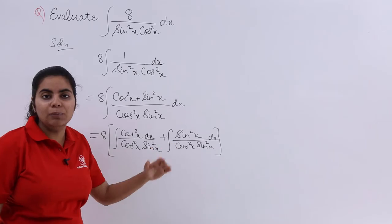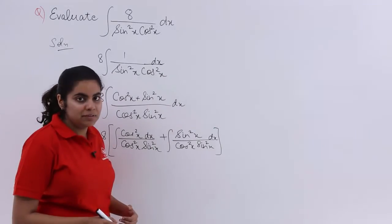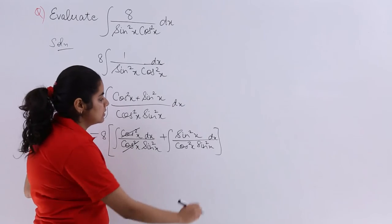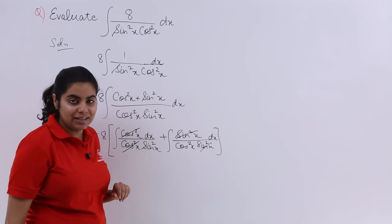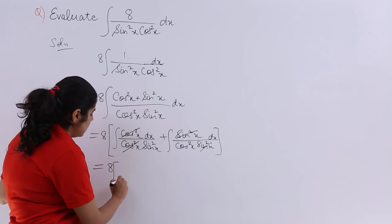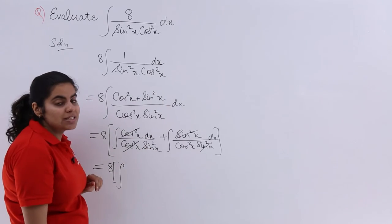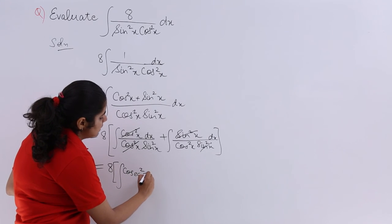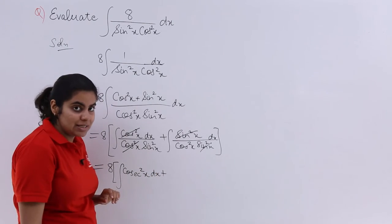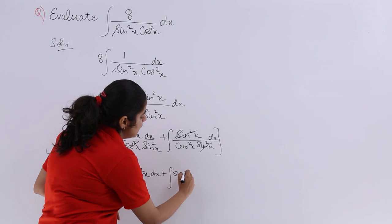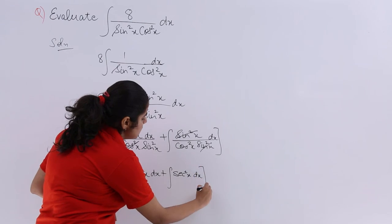What is the problem with it? No problem at all. Now cancel whatever cancels. So what we see, cos square x and cos square x getting cancelled, sin square x sin square x getting cancelled. Then we see that it should become 8 and then the integration of 1 upon sin square x dx, that means cosecant square x dx, plus the integration of 1 upon cos square x dx, that is secant square x dx.